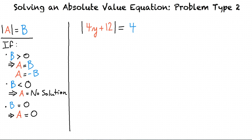First of all, let's solve our example problem with the absolute value equal to positive 4: 4y plus 12 equals 4. I subtract 12 from both sides to result in 4y equals negative 8, and then I divide both sides by 4 to get y equals negative 2.